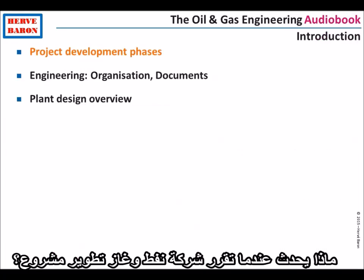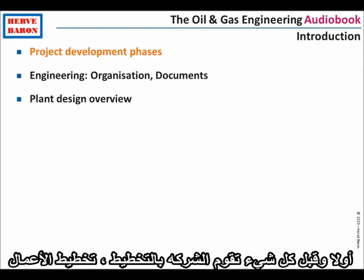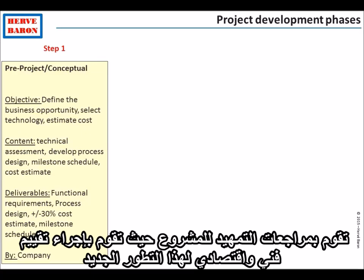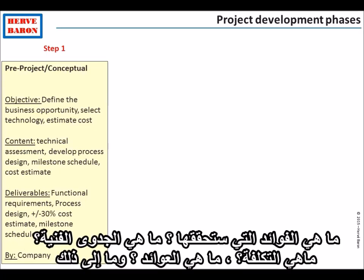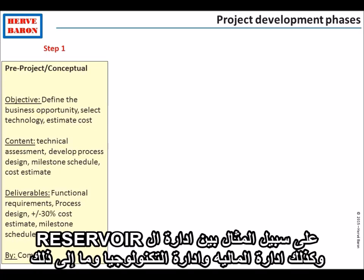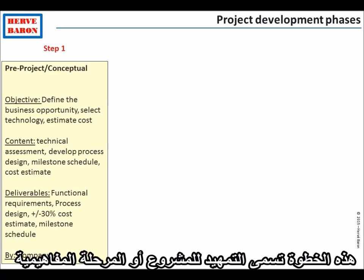What happens when an oil and gas company decides to develop a project? First of all, the company's business planning or pre-project department performs a technical and economic assessment of this new development — what business benefits will it bring, what is the technical feasibility, what is the cost, what is the rate of return, and so forth. This process is carried out internally within oil and gas companies, since it involves coordination between the reservoir department, financing, technology, and so forth. This step is called the pre-project or the conceptual phase.